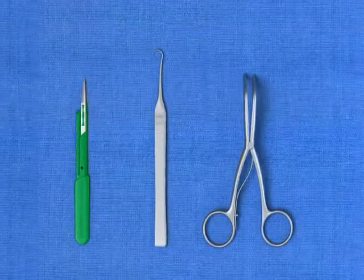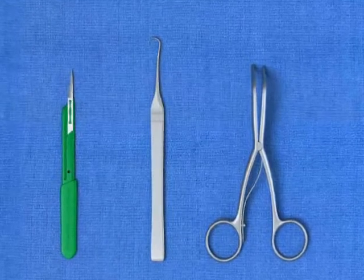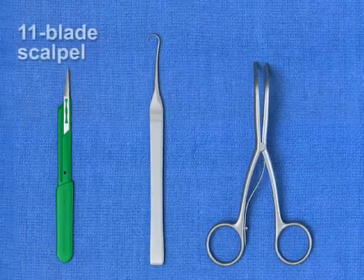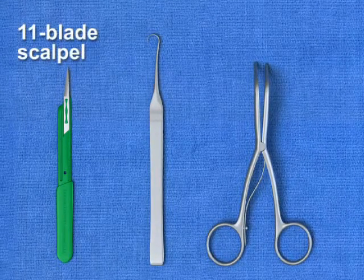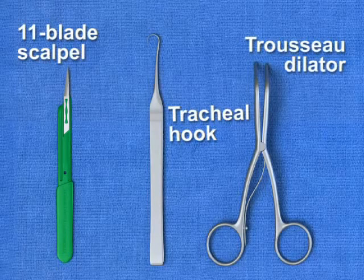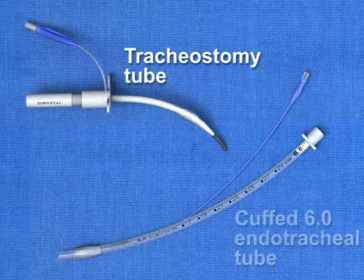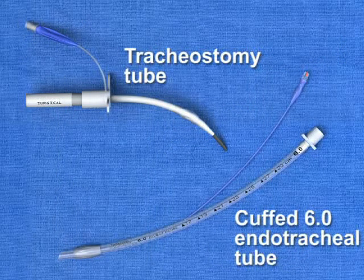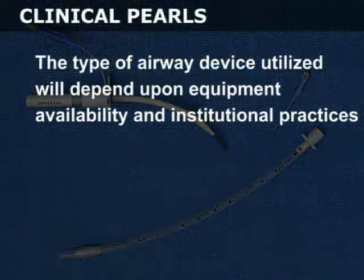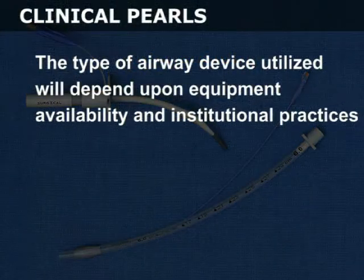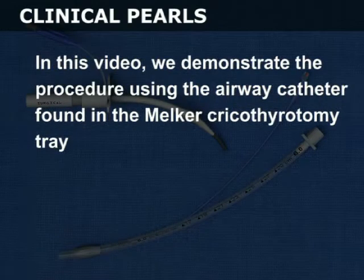The required equipment for a traditional surgical cricothyroidotomy includes an 11-blade scalpel, a tracheal hook, a trousseau dilator, and a tracheostomy tube or cuffed 6.0 endotracheal tube. The type of airway device utilized will depend on equipment availability and institutional practices. In this video, we demonstrate the procedure using the airway catheter found in the Melker cricothyroidotomy tray.